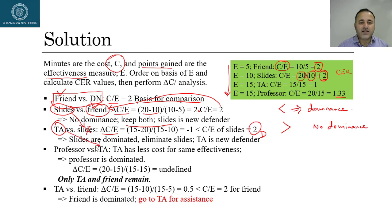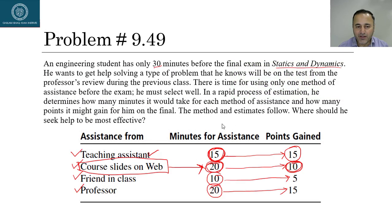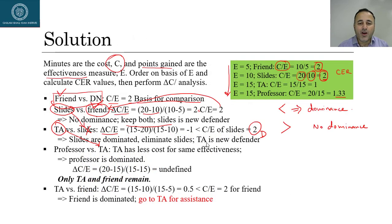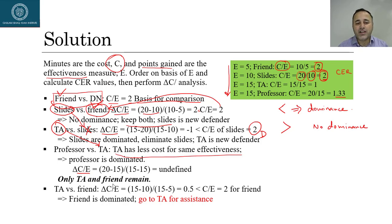TA becomes the new defender. Comparing Professor versus TA: both have the same effectiveness of 15 points, but Professor costs 20 minutes versus TA's 15 minutes. The incremental CE ratio is undefined (denominator = 15−15 = 0). By inspection, TA is clearly better — same effectiveness at lower cost. Professor is eliminated.